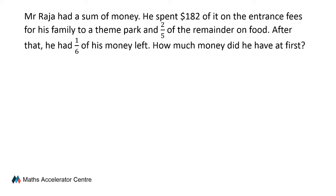Mr. Raja has a sum of money. He spends $182 of it on the entrance fees for his family to a theme park, and two-fifths of the remainder on food. After that, he had one-sixth of his money left. How much money did he have at first?